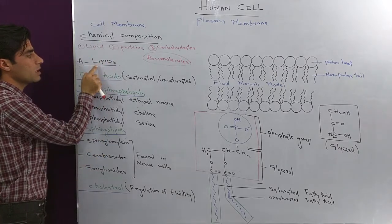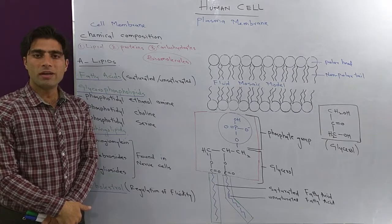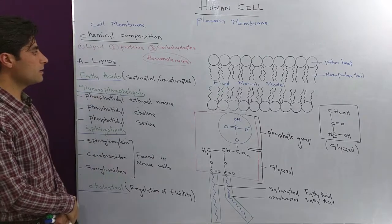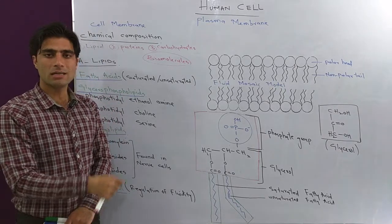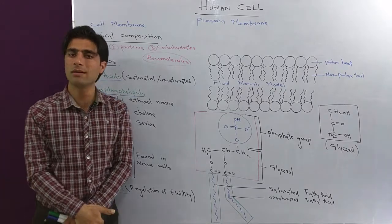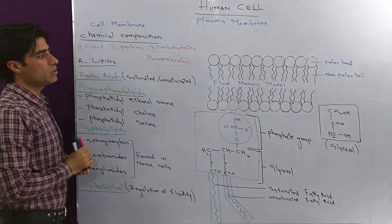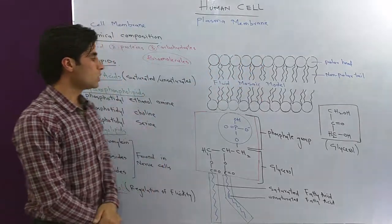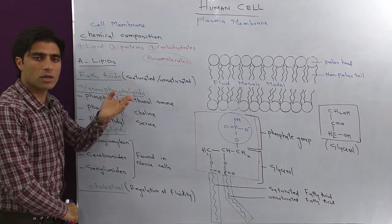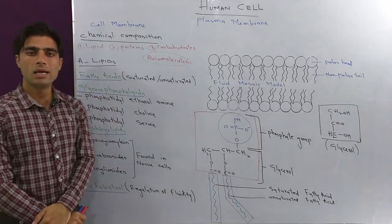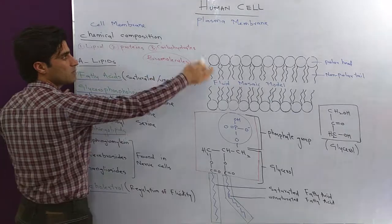Let's come to the first chemical component of the cell membrane: lipid. Lipids are made up of fatty acids, which are long-chain molecules with a carboxylic acid functional group. The monomers of lipid are fatty acids, which can be saturated or unsaturated.